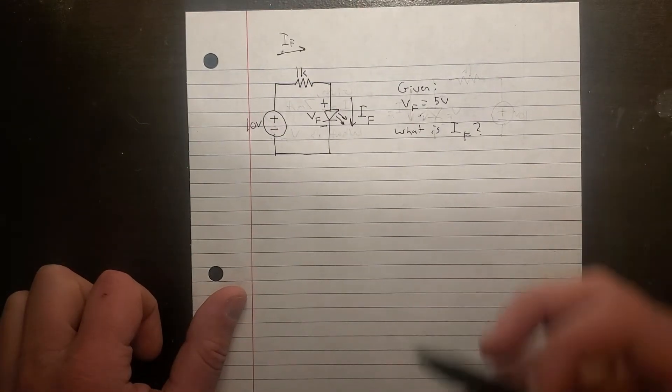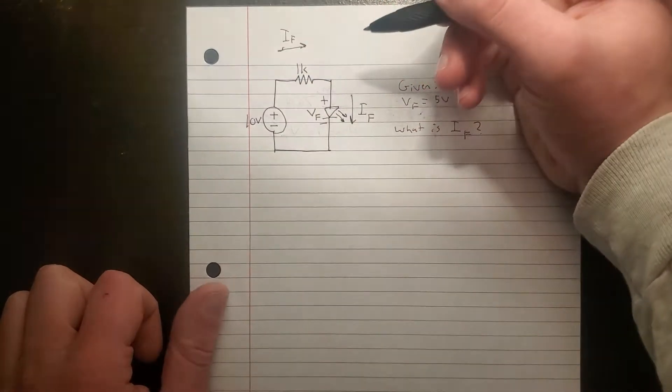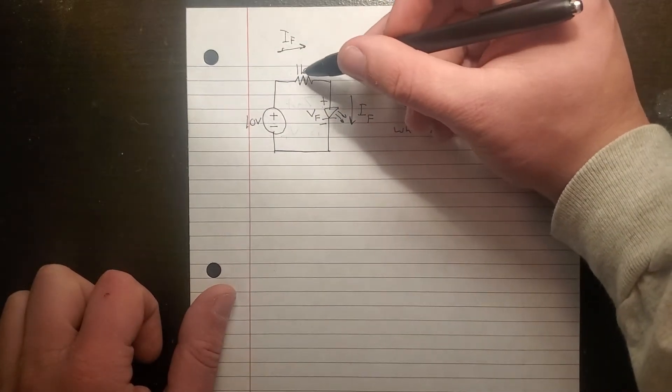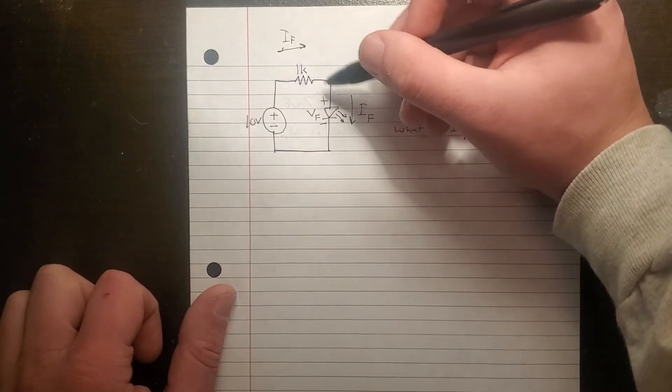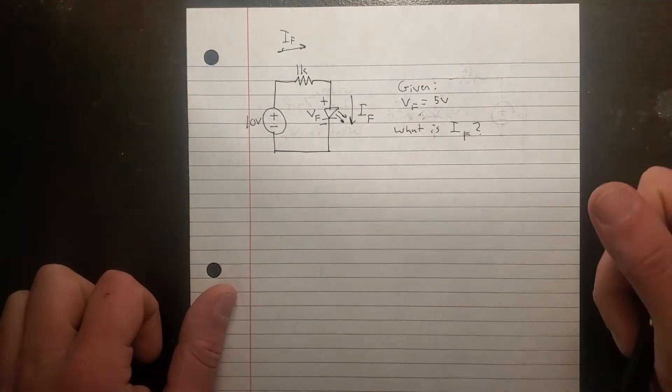Otherwise there's no potential difference. So what that means is, when you add the voltage over the resistor and then the voltage over the LED, you will get 10V.